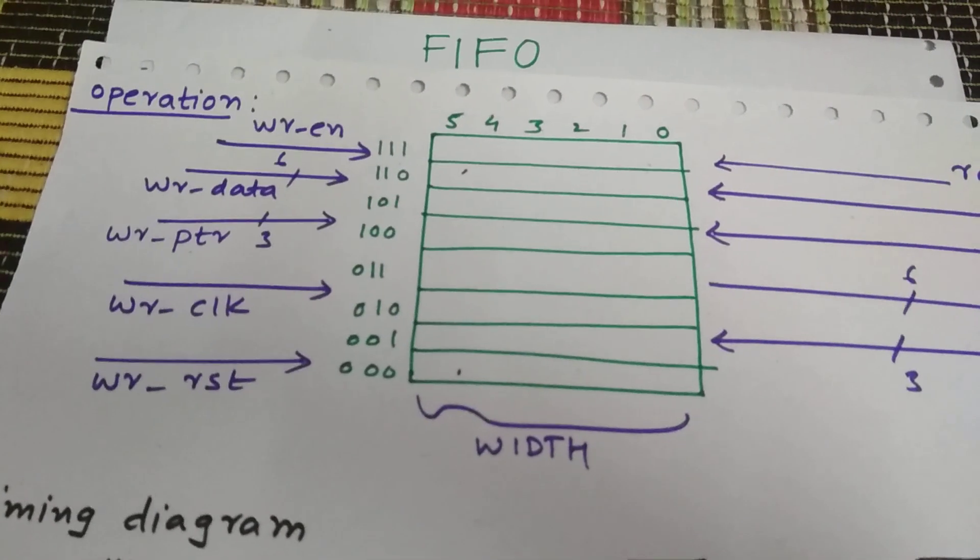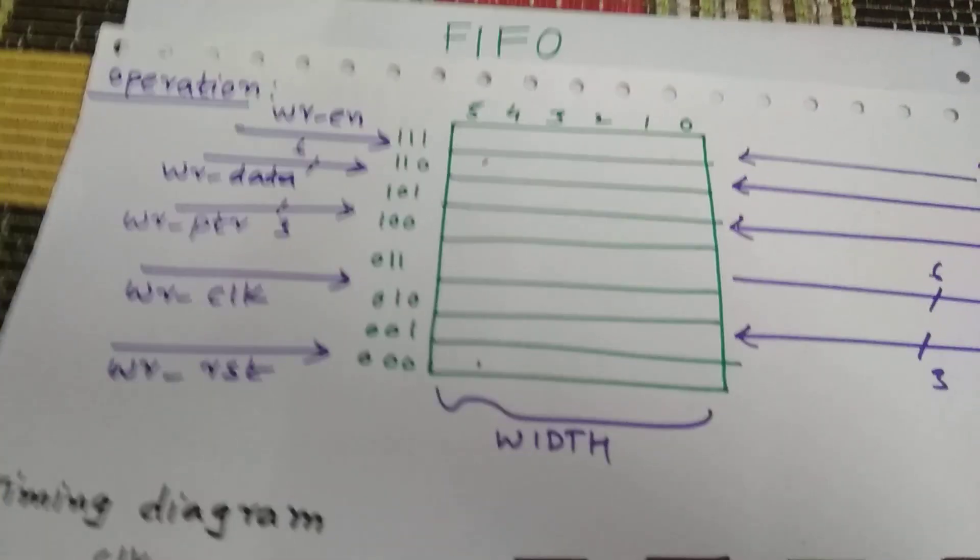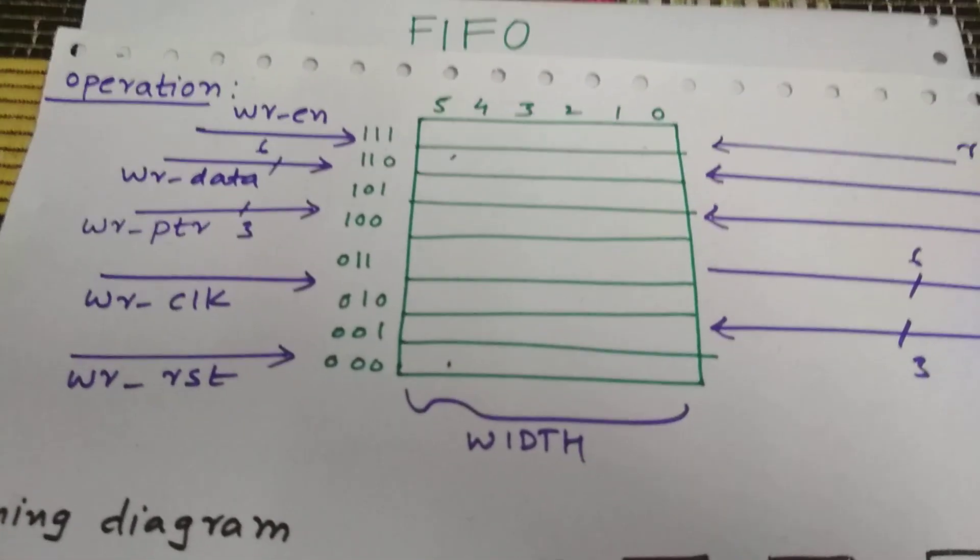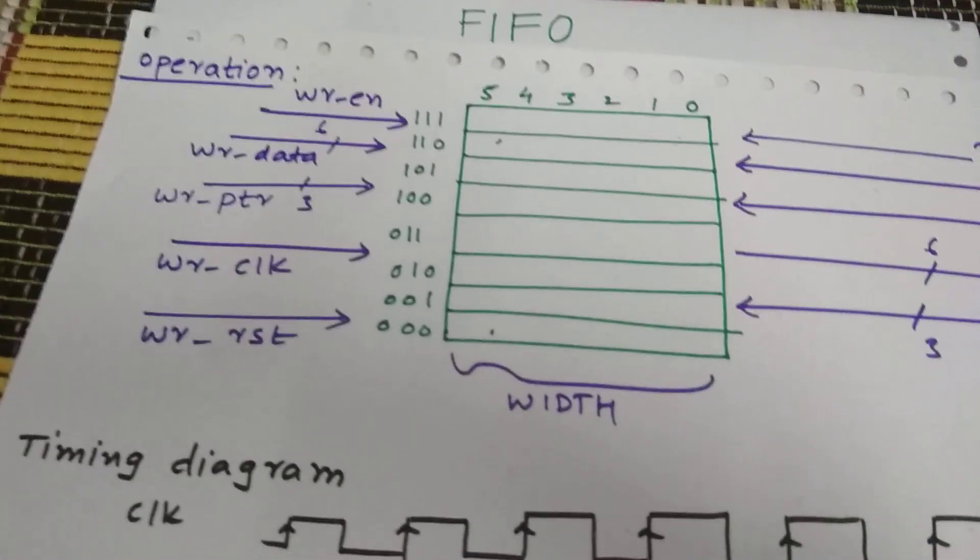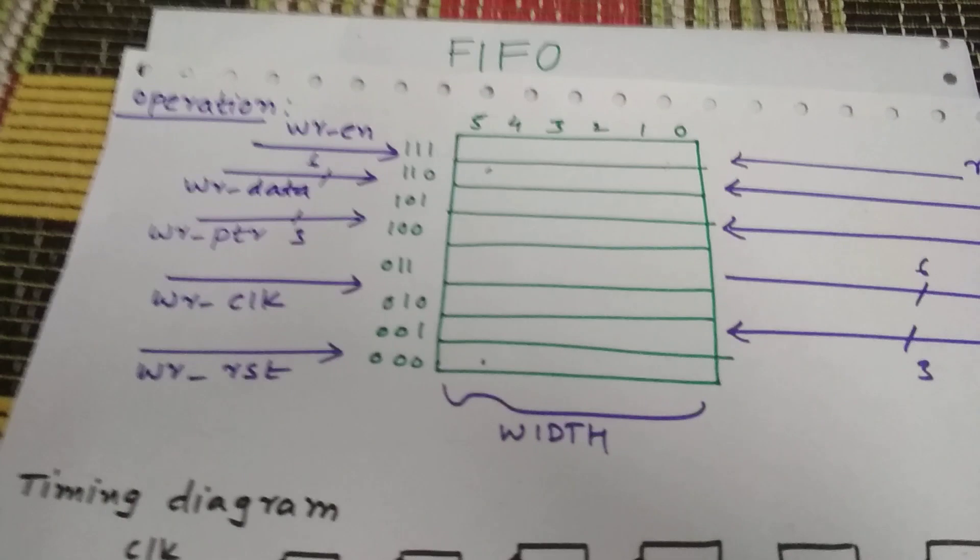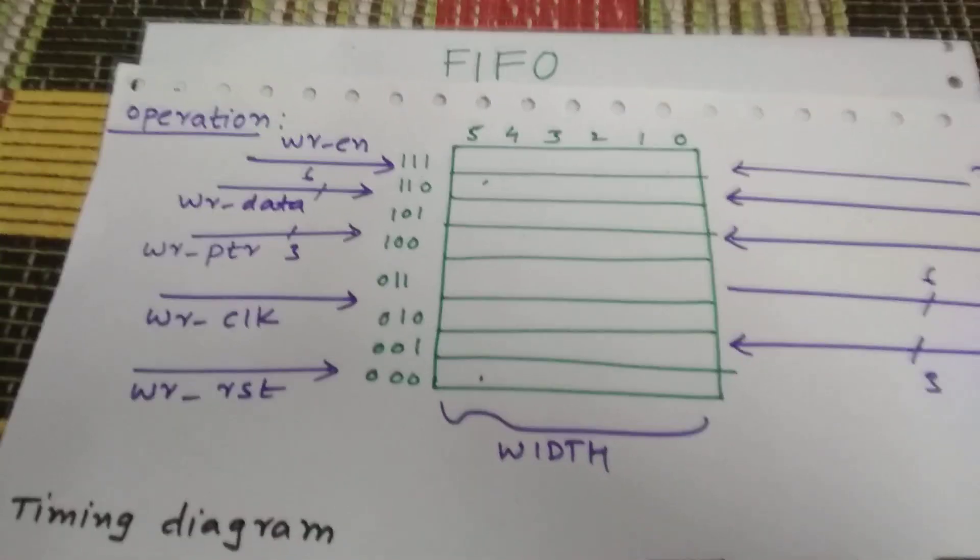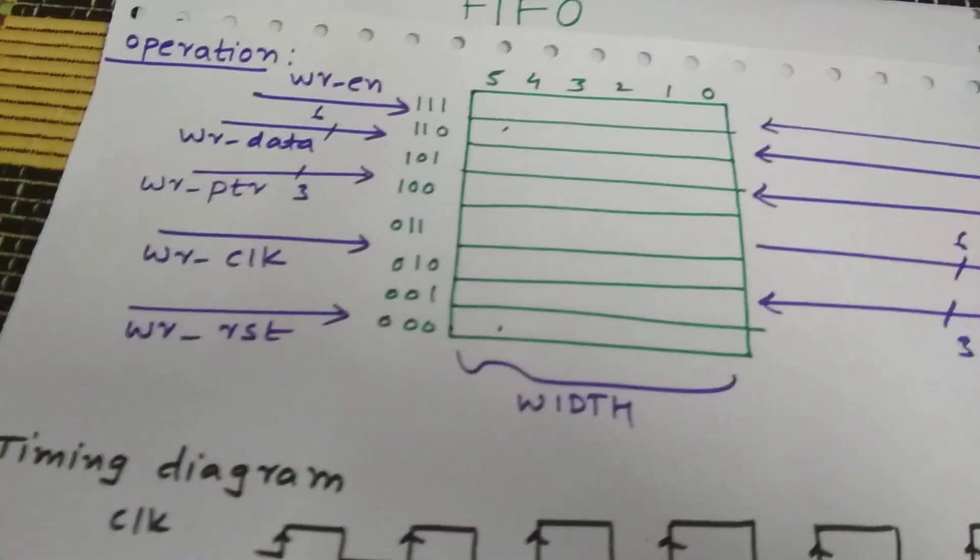So in the same locations, that means it's an empty FIFO. So we can consider that whenever the write pointer and the read pointer are equal, then it's an empty condition. This is an empty condition.